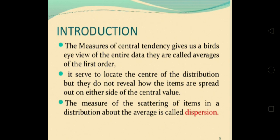These are called averages of the first order and serve to locate the center of the distribution. But they don't reveal how the items are spread out on either side of the central value. The measure of scattering of items in the distribution about the average is called dispersion.